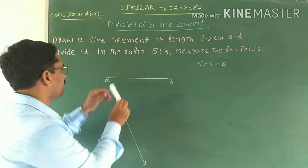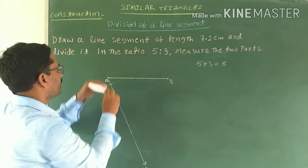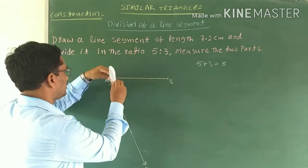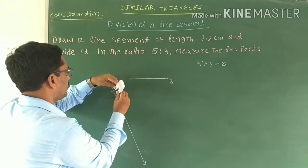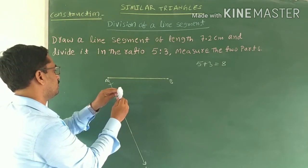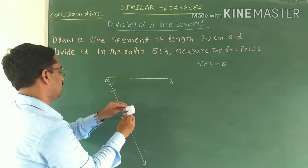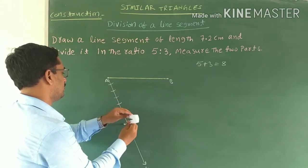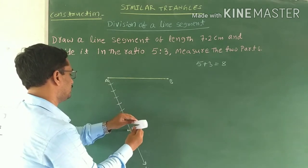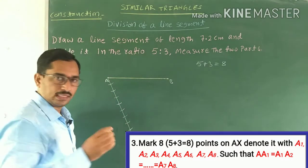Using the compass, with center A draw an arc, then with the same length draw successive arcs. This is the second arc, third arc — put the center here — fourth arc, fifth, sixth, seventh, and eighth. Draw 8 arcs like this.